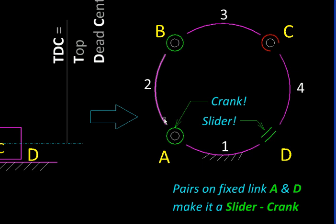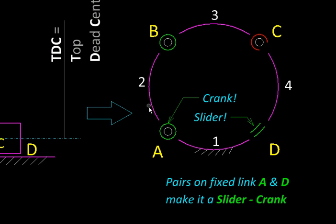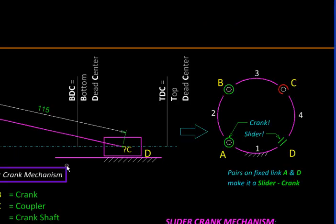And therefore this will be called a slider crank mechanism. We can consider either the crank or the slider as the input link, because slider crank transforms reciprocating motion into rotary motion, as in the case of an IC engine, or rotary motion into reciprocating motion, as in the case of a reciprocating pump or compressor.